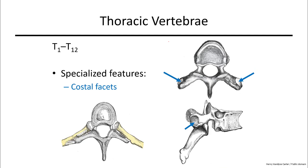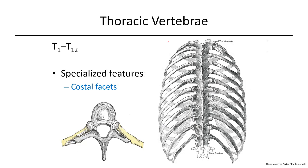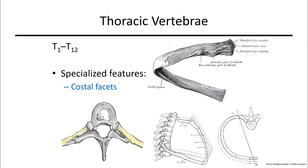Thoracic vertebrae have the classic look of a vertebra with long transverse processes, a very pointy spinous process, and a moderately sized body. The unique features of these vertebrae relate to the ribs. Costal facets — smooth indentations where each rib is positioned — are found on the ends of the right and left transverse processes, in addition to facets along the body. There are 12 pairs of ribs, each bound to one of the 12 thoracic vertebrae. Ribs angle downward as they wrap around anteriorly, and their pivot points along the thoracic vertebrae are integral to how we breathe.